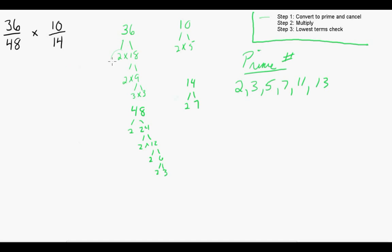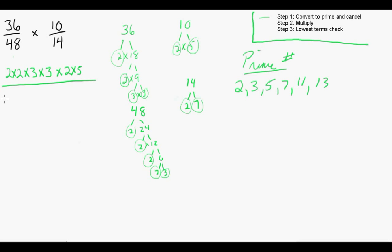Because we have so many prime factors, we're going to go through and circle each one. So we can rewrite this fraction in terms of its prime factors. The numerator is 2 times 2 times 3 times 3, and 10 converted to 2 times 5. The denominator: 48 converted to 2 times 2 times 2 times 2 times 3, and 14 converted to 2 times 7.